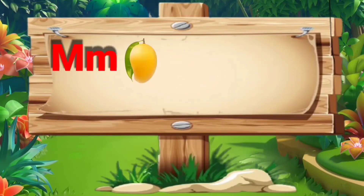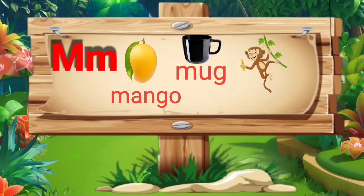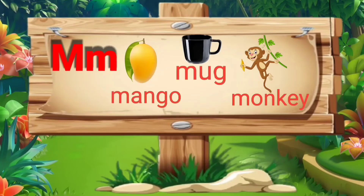M. M for mango: M, A, N, G, O — mango. M for mug: M, U, G — mug. M for monkey: M, O, N, K, E, Y — monkey.